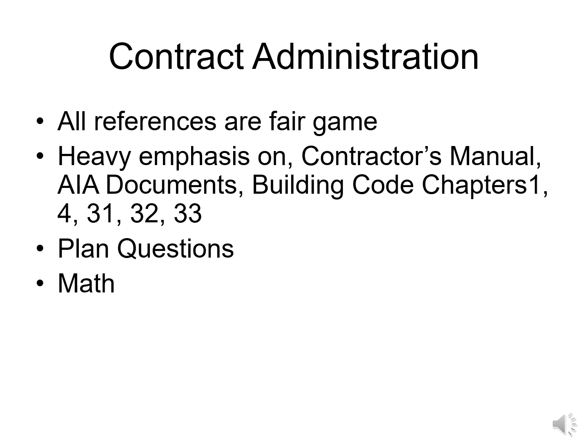Generally what happens is somebody will eventually pass the business and finance exam. Since there is so much information on this exam covering the contractor's manual and the AIA documents — which were also in the business and finance exam — they generally just add a few things and get past the contract administration, then may struggle in the project management.